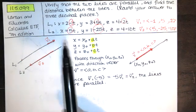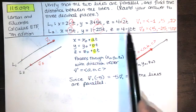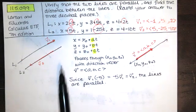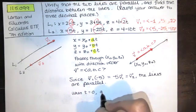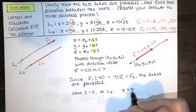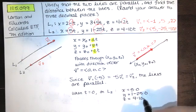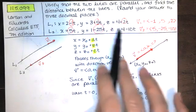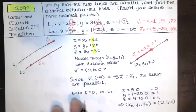To find a point on line two, I substitute t = 0. We get x = 5(0), y = 1 − 25(0), and z = 4 − 10(0), which gives the point (0, 1, 4). This is the same as reading off x₀, y₀, z₀ directly from the parametric form.